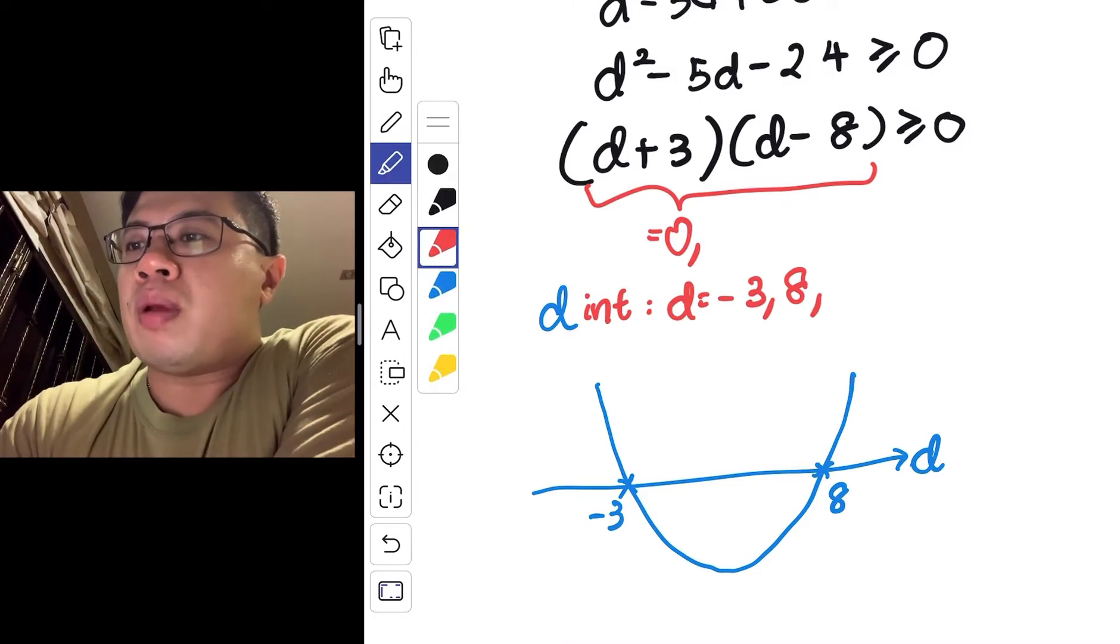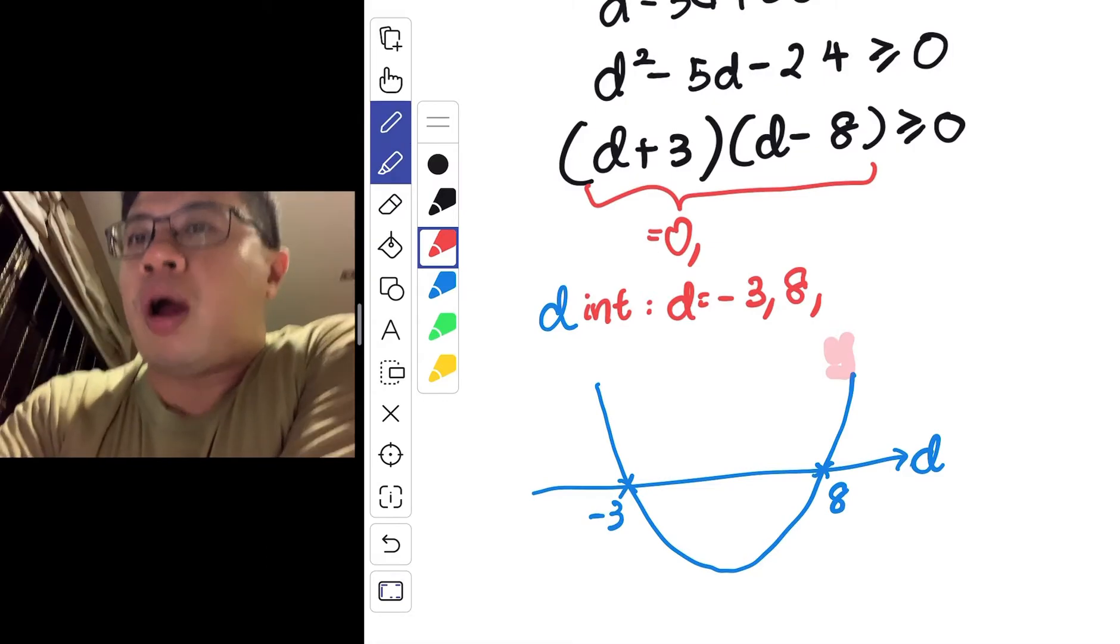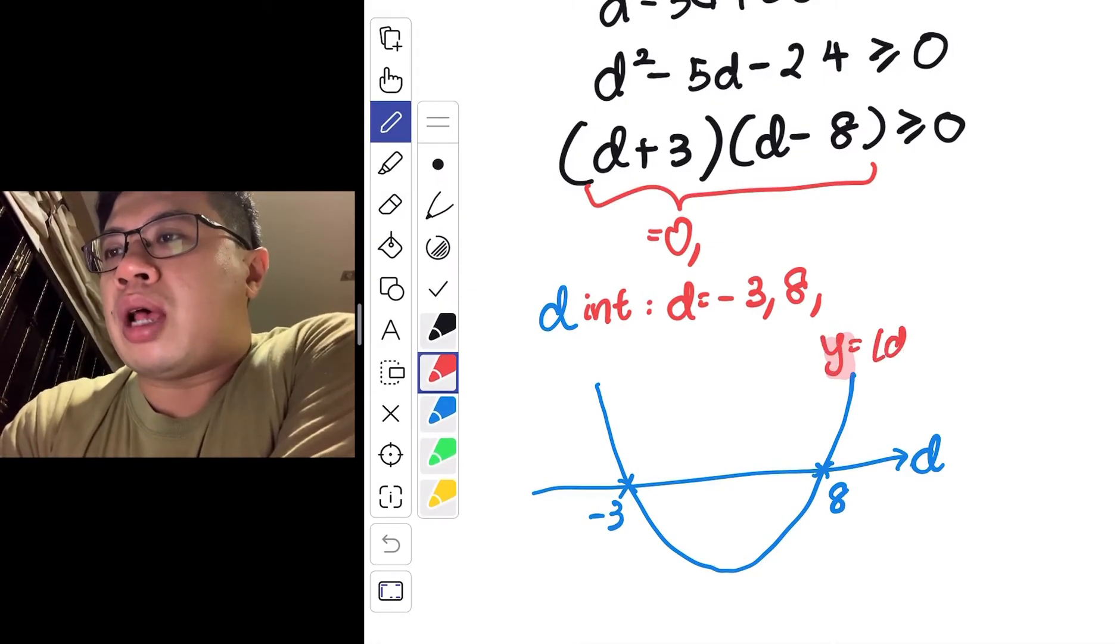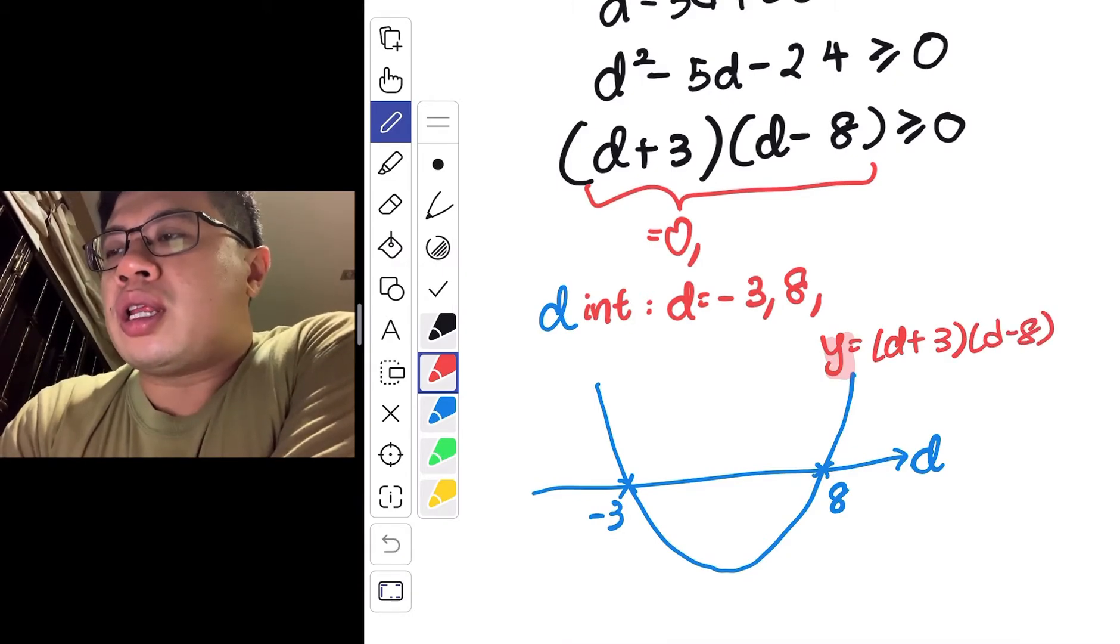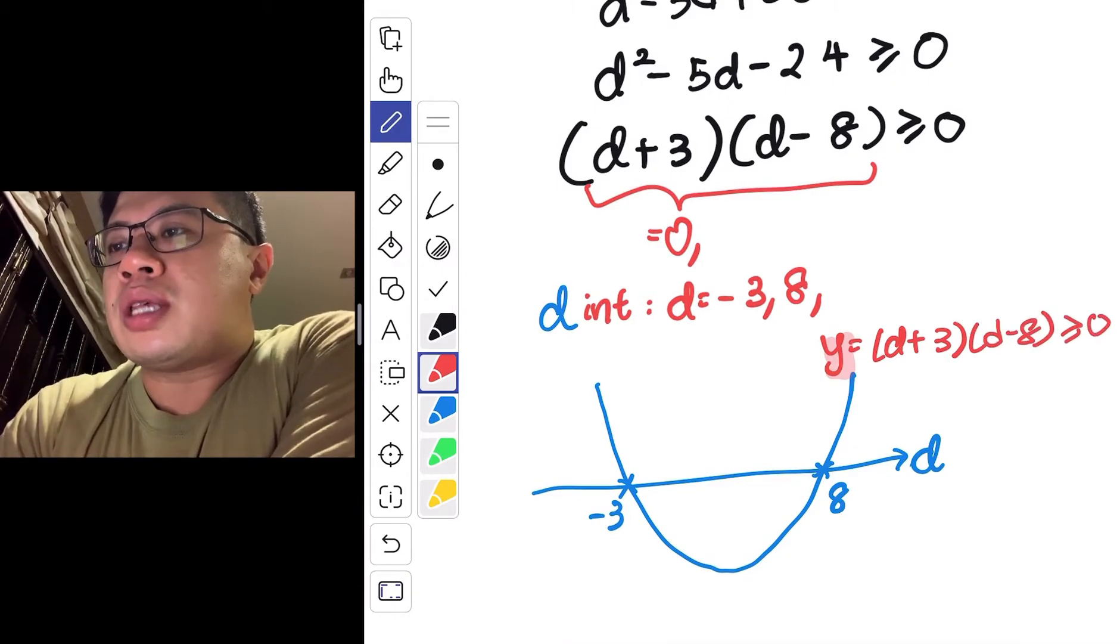So what does it mean by more than equals to 0? Now, if you remember, this is our y, our y-function, which is equals to d plus 3, d minus 8. And if you're interested in it being more than equals to 0, it's the same as you relating it to the y more than equals to 0.